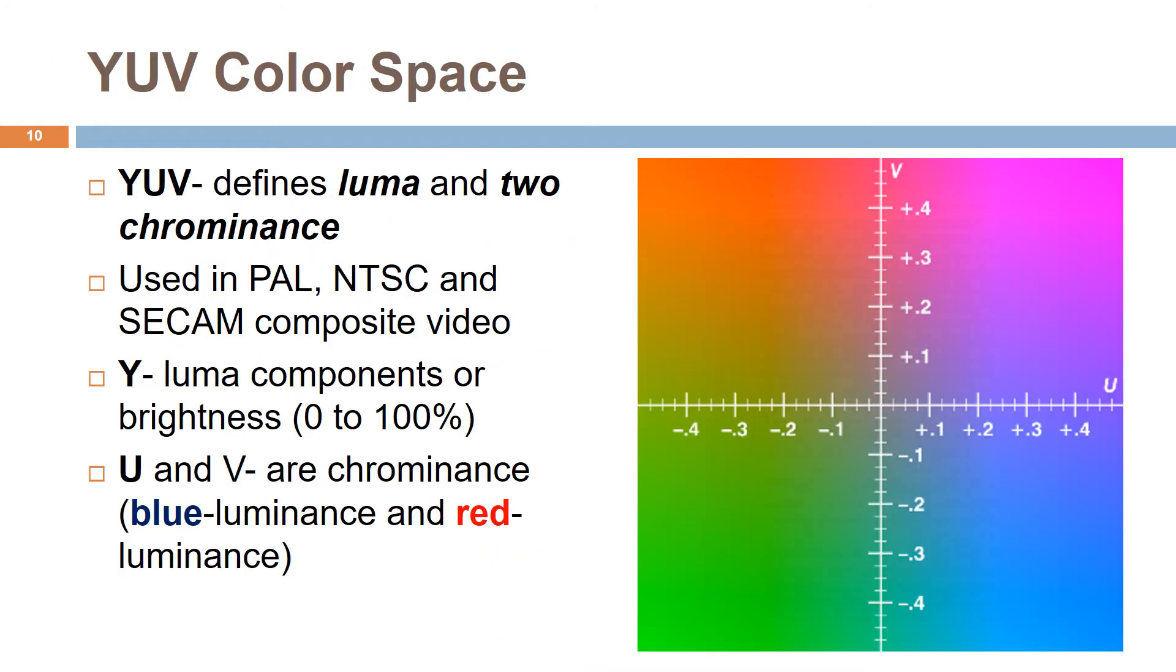The YUV model defines a color space in terms of one luma and two chrominance components and is similar to YPbPr and YCbCr. The YUV color model is used in the PAL, NTSC, and SECAM composite color video standards.